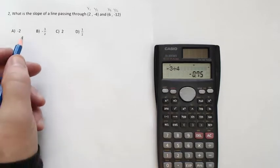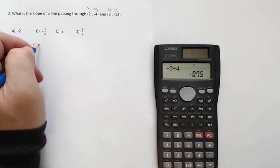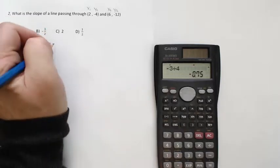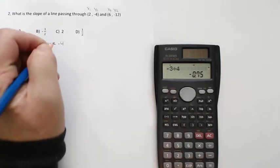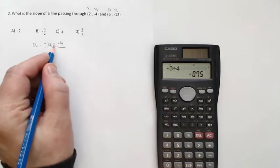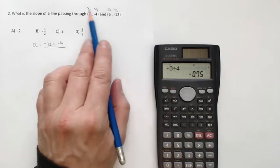And we'll apply the slope formula. A is equal to y2, negative 12, minus y1, minus negative 4. Be careful here. This question has been designed to try to confuse you on that double negative. Divided by 6 minus 2.